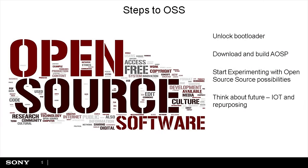What are the steps to build and flash this software? You have to go to our website and unlock your bootloader. You have to download and build the AOSP code. After that, you can start experimenting with open source possibilities and start innovating. And in the end, you can think about future IoT and, why not, repurposing.